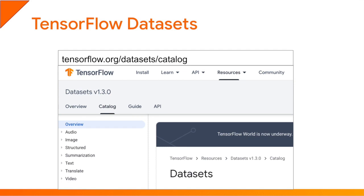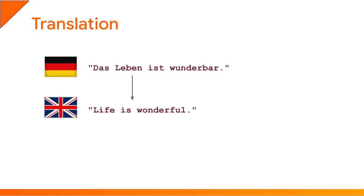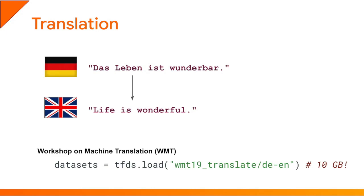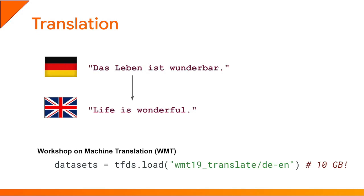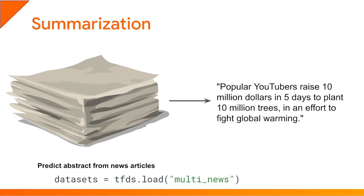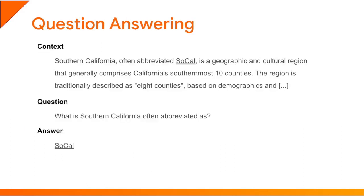You can check out the datasets that TFDS offers at tensorflow.org/datasets/catalog. You'll find many popular NLP datasets, many of which are used in research papers to benchmark NLP models. For example, if you want a translation dataset such as German to English, you can load the corresponding WMT dataset — that's Workshop on Machine Translation — which is actually 10 gigabytes large. If you're interested in automatic summarization, you'll find datasets such as Multinews, where the model gets a long piece of text like a news article and must output a short summary. TFDS also contains question answering datasets, where the model is given some context and a question and must give the right answer.